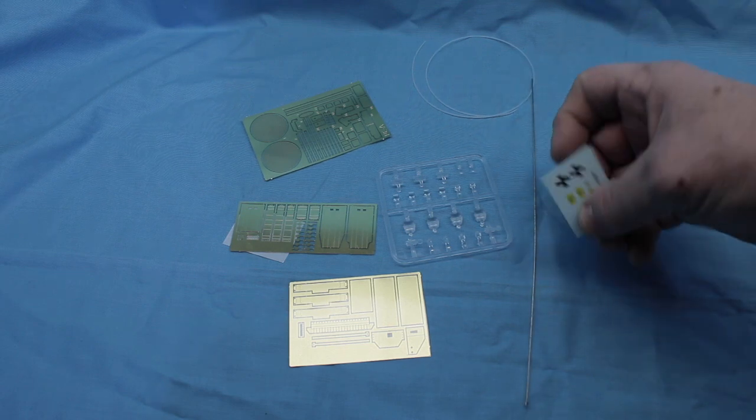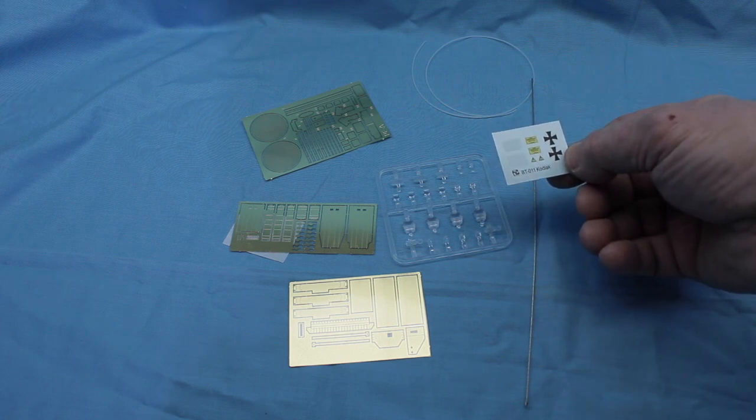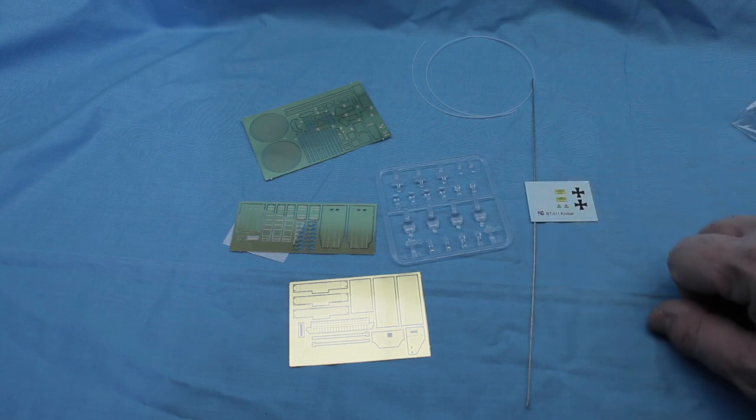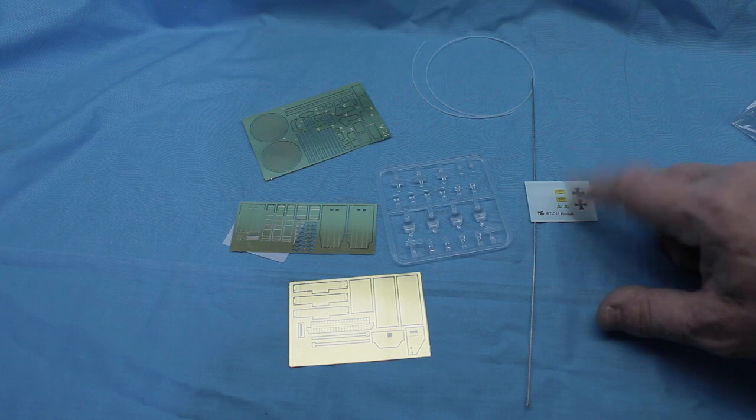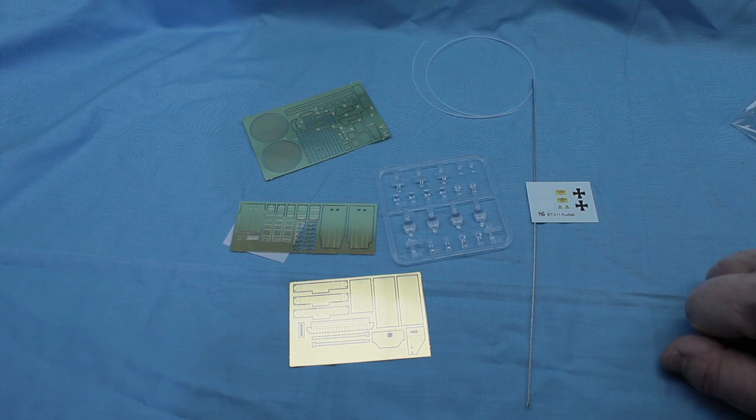And then your basic decals, which are just real simple. Nothing special to them. You've got a couple of warning placards and your Swiss marking or your German insignia. But nothing special to that. I know there's a lot more warning placards on this vehicle. I've seen the pictures of it. So it's kind of short on that end. But other than that, really nice quality.